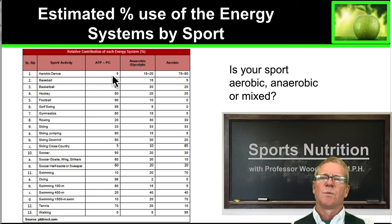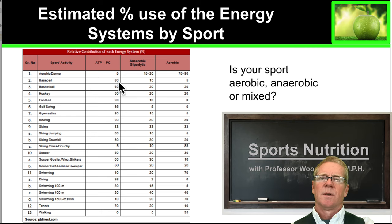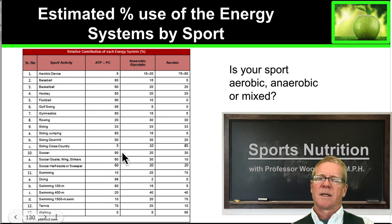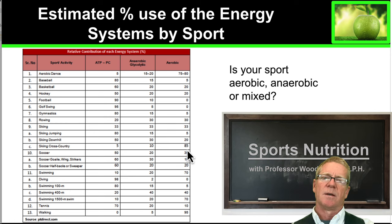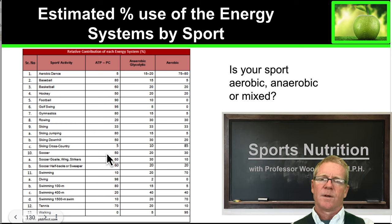When we break down the energy systems used by sport, it varies dramatically. Dance, for example, is largely aerobic but does have some anaerobic capacity and some explosive elements. Baseball, on the other hand, is largely an anaerobic phosphocreatine explosive resistance sport. Soccer is a mixed sport, very evenly balanced between the phosphagen system at 50 percent, the anaerobic system at 20 percent, and aerobic. Swimming is largely aerobic.